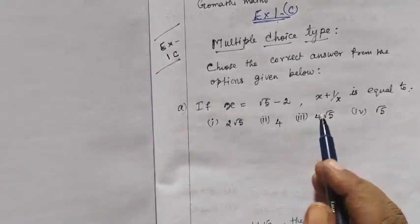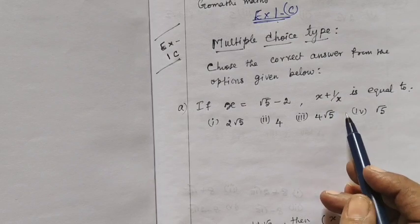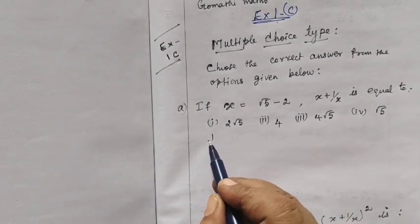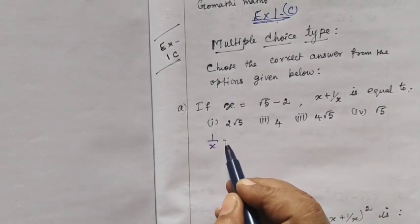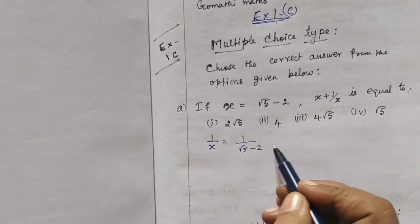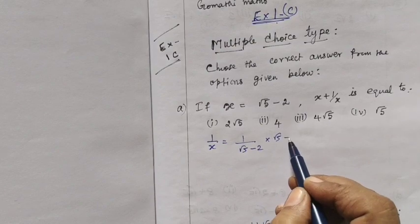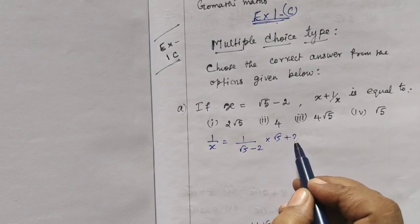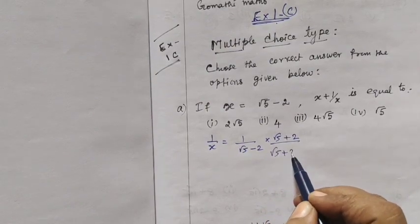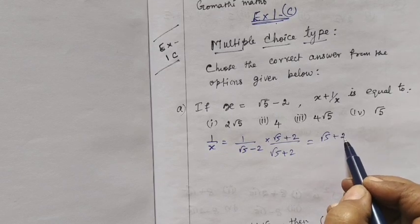If x equals root 5 minus 2, find x plus 1 by x. Four options given. So first we find 1 by x. 1 by x means 1 by root 5 minus 2. So we take the conjugate: root 5 plus 2 over root 5 plus 2.